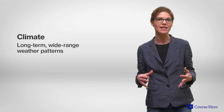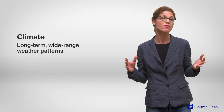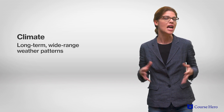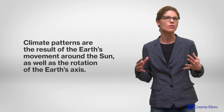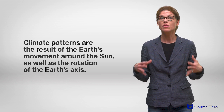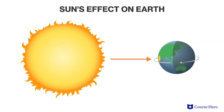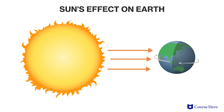Earth's biomes and ecosystems are diverse because climate varies geographically. Climate is the long-term, wide-range weather patterns that an area experiences, such as the amount of precipitation, the average temperature, and the average humidity. Climate patterns are the result of Earth's movement around the sun and Earth's daily rotation on its tilted axis. Areas around the equator experience direct sun exposure for most of the year. However, areas away from the equator experience seasonal variation in sun exposure, depending on which part of the Earth is tilting toward or away from the sun. In addition to predictable annual variation in sun exposure, there are major global patterns in air movement.